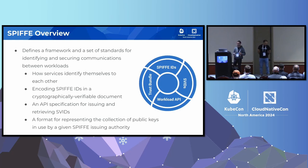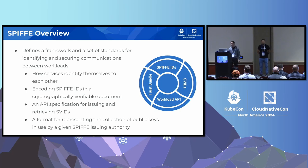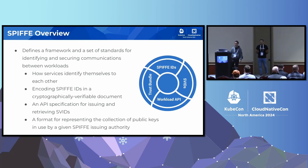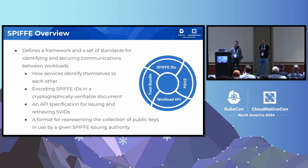You also need some kind of document where you can put those IDs. For that, it defines the SPIFFE verifiable identity documents, where the SPIFFE IDs are encoded. Once you have that, you also need a way to distribute the SPIFFE IDs. For that, it defines what we call the workload API — an API specification that defines the issuance and retrieval of SPIFFE IDs.